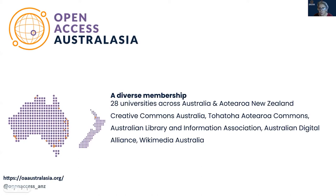Just to talk about Open Access Australasia, in case you're not familiar: we are a diverse membership organisation with 28 member universities across Australia and New Zealand who support our work financially. We also have affiliate organisations including Creative Commons Australia, Tohatoha in New Zealand, ALIA, ADA and Bookie Media Australia. The work that we do is supported by these groups, and we involve members as consultants to the work that we're putting forward.